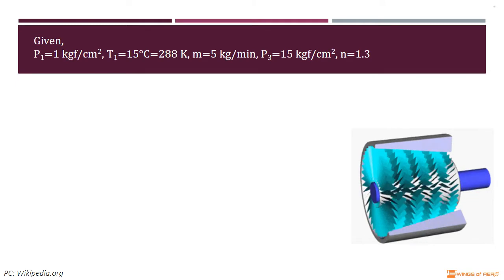Let's write the given data. Inlet pressure of air P₁ = 1 kgf/cm². Inlet temperature T₁ = 15°C or 288 K. Mass rate of air ṁ = 5 kg/min. Final pressure P₃ = 15 kgf/cm², and polytropic index n = 1.3.